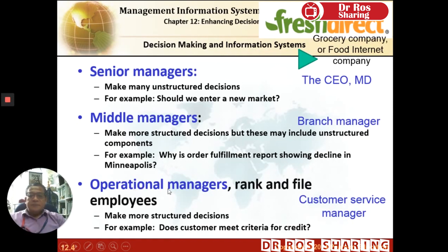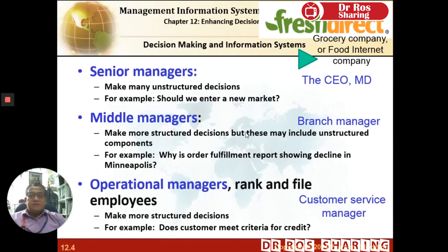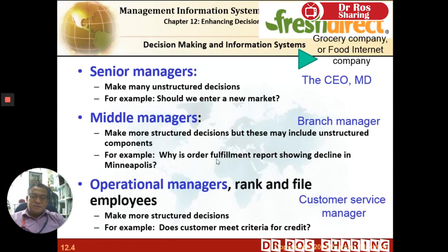Operational managers normally make structured decisions. For example, which customer meets the credit line so that goods can be supplied to them — such as a customer service manager. For middle managers, like a branch manager, they normally make more structured decisions for the organization using IT systems. For example, why is the order report showing a decline in the area of Parit Raja in the past six months? Managers have to decide what the major contributing factors are by using data in the IT system so that they can know the actual reason.